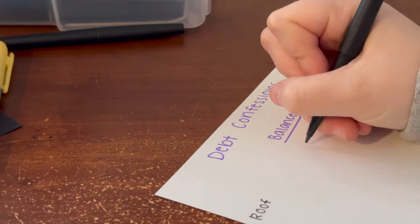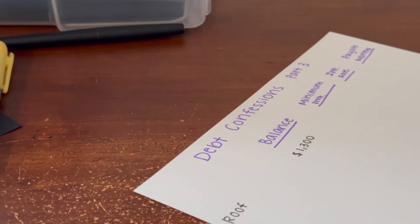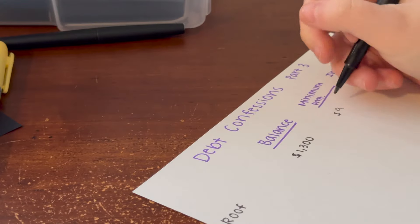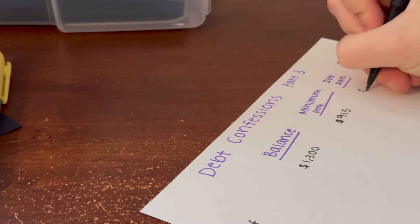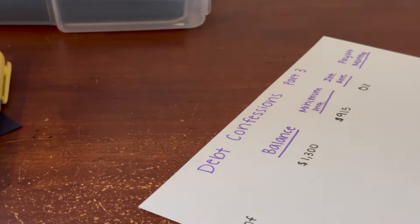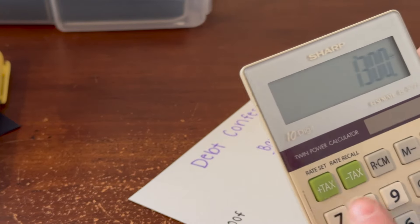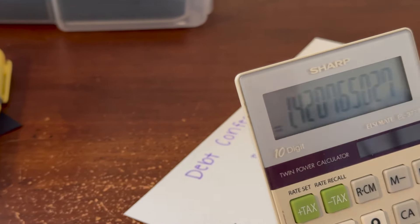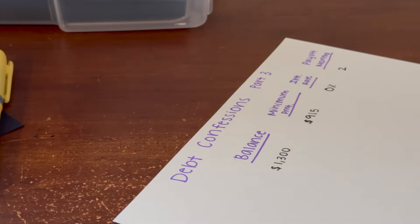At the time of filming this, the balance on the roof is $1,300. The minimum payment is $915 because of our snowball. The interest rate, because we did borrow from family, thankfully is zero percent. If you take the $1,300 divided by our minimum payment of $915, we will have this paid off in one and a half months, so we're just going to say two. That's great because I'm filming this in January, so by end of February we should have this paid off.